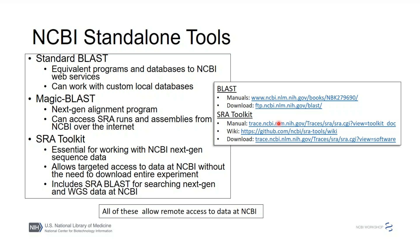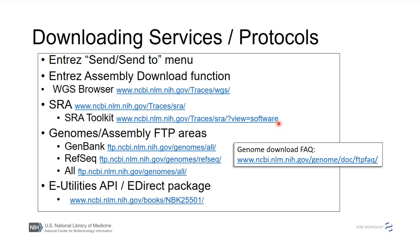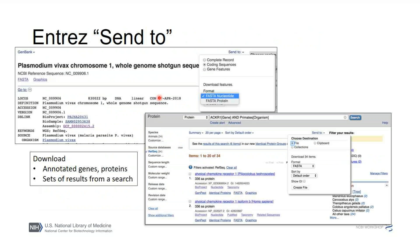For downloading data: the SRA Toolkit, FTP areas for assemblies — the RefSeq assemblies are the ones I'd emphasize — and a download FAQ explaining how to use those directories with command-line tools. There are also two web-based options: the 'Send to' menu in Entrez and the download function in the Assembly database. I'll show you a slide pointing those out.